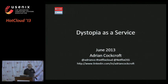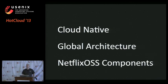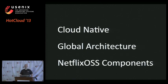Thanks for inviting me. I'll explain what I mean by 'dystopia as a service' as we get into this. The three things I'm going to talk about are: cloud native — what is a cloud native application and what does that look like; the global architecture of how Netflix runs as a global service; and the open source components we now have — I think around 35 projects on GitHub, releasing about one a week.